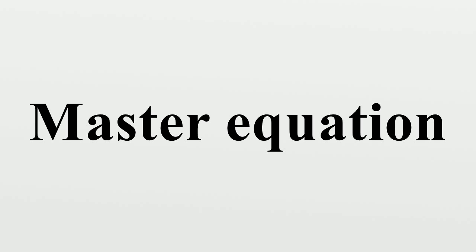Let the matrix describe the transition rates. As always, the first subscript represents the row and the second subscript the column — that is, the sources are given by the second subscript and the destination by the first subscript. This is the opposite of what one might expect, but it is technically convenient.